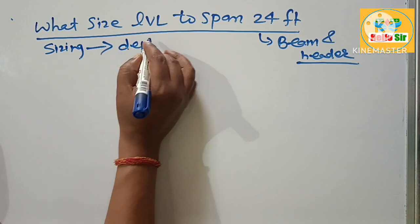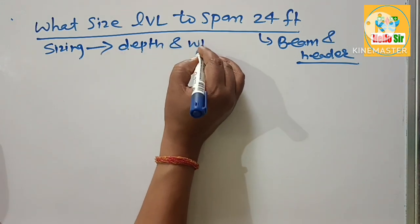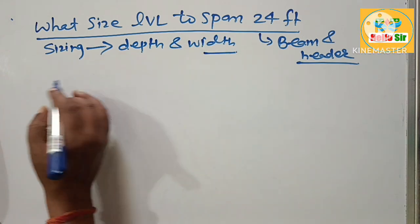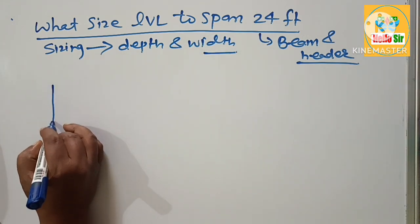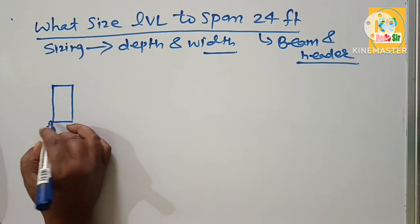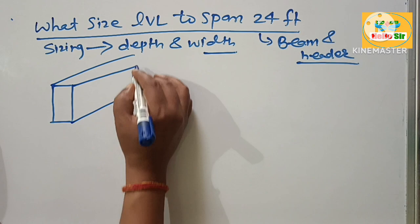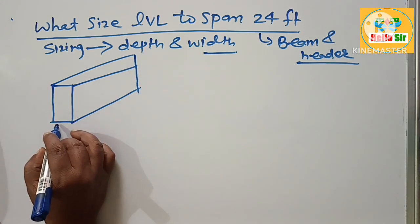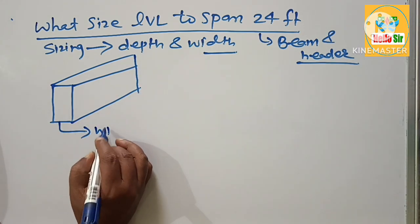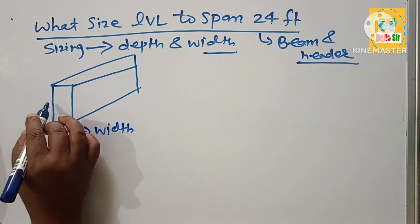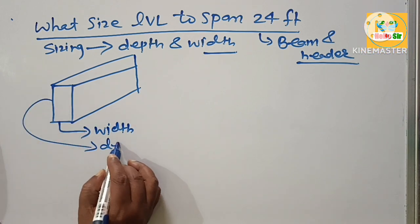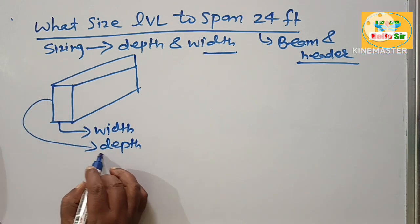Suppose this one is an LVL beam. Make a rough diagram to understand what are the width and thickness. This one is width and this one is depth. You have to find out depth required for 24 foot span.